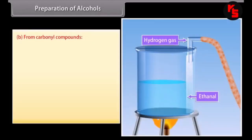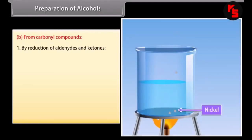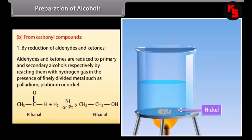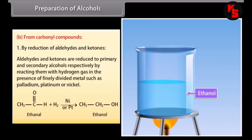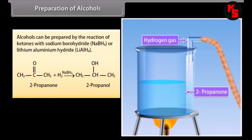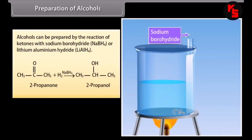Preparation of alcohols from carbonyl compounds by reduction of aldehydes and ketones: aldehydes and ketones are reduced to primary and secondary alcohols respectively by reacting them with hydrogen gas in the presence of finely divided metals such as palladium, platinum or nickel. Alcohols can also be prepared by the reaction of ketones with sodium borohydride or lithium aluminium hydride.